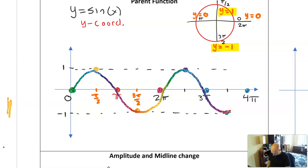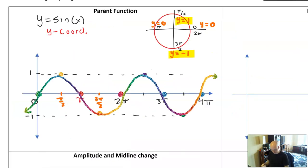And then repeat the pattern and connect with a smooth curve. I do like to put arrows on both ends and kind of continue the pattern out in both ways to show that this really is a wave. It continues infinitely in both directions. So that's our parent function for sine of x.